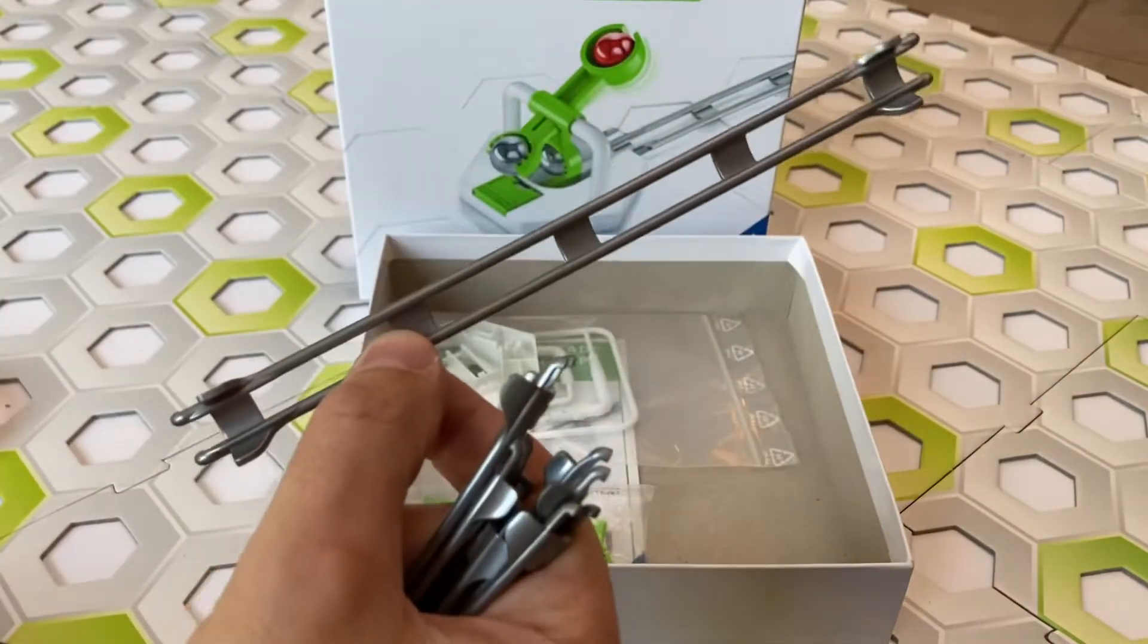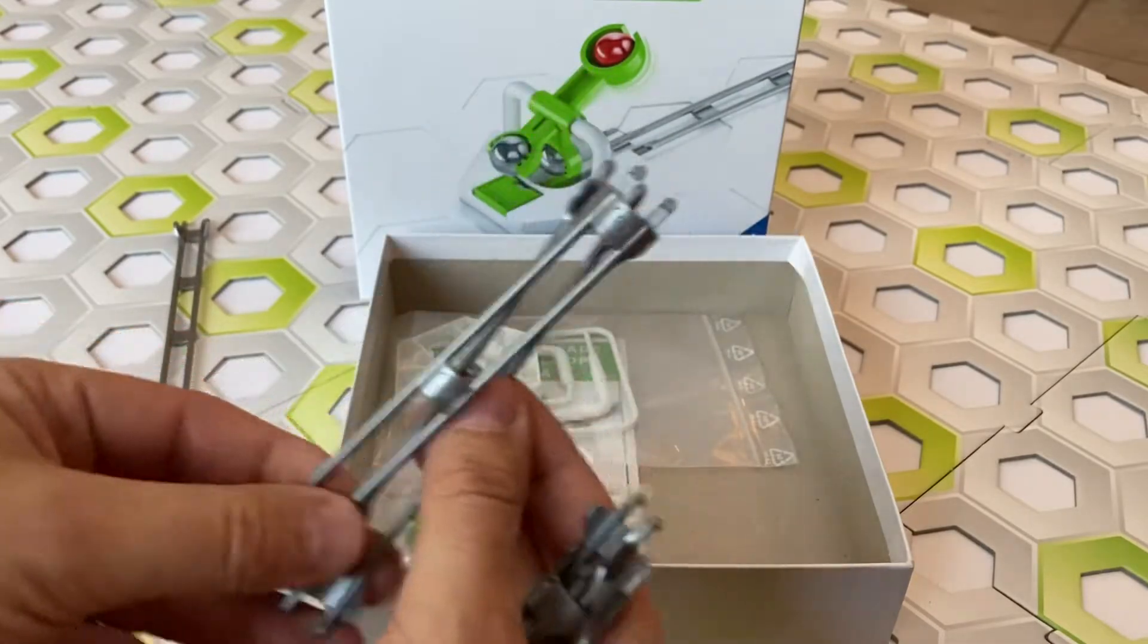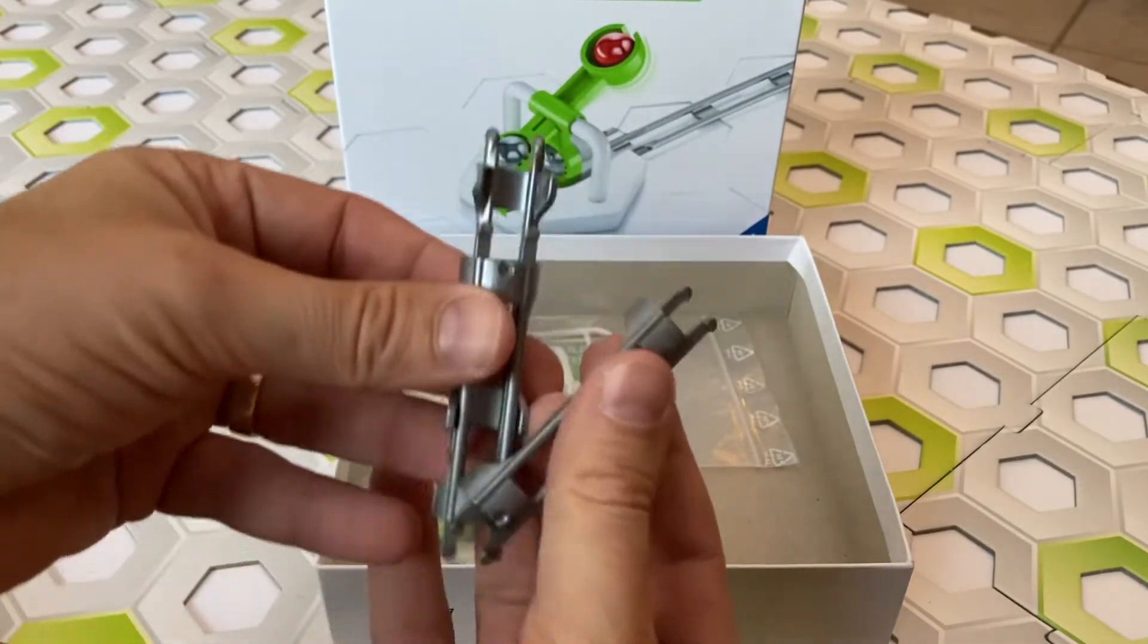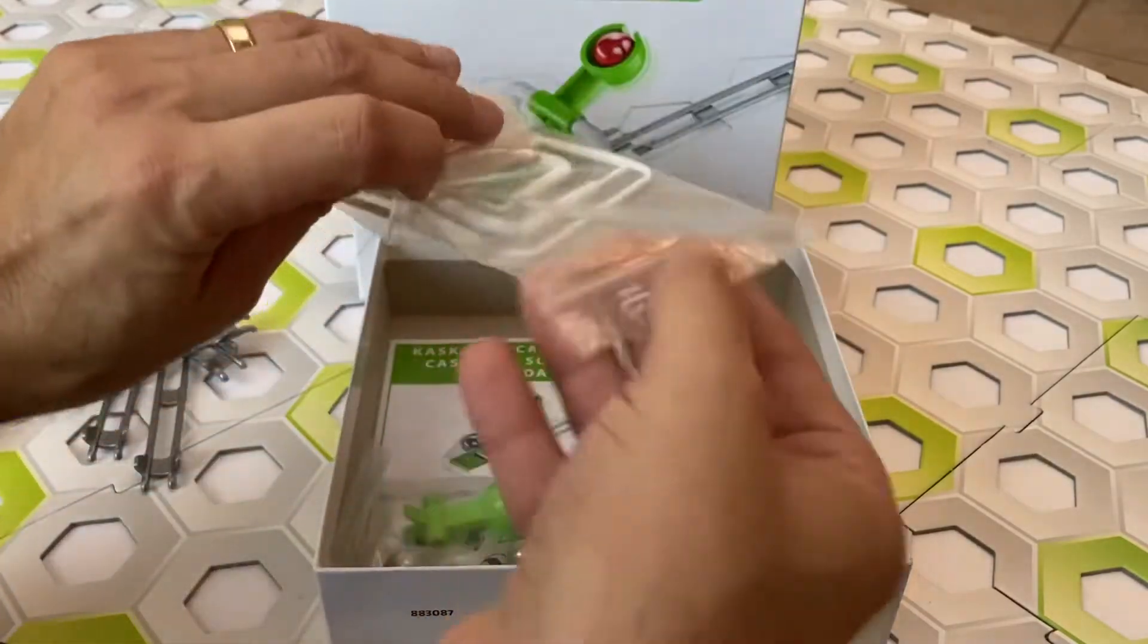You get one long track piece which spans three spaces, two medium track pieces which span two spaces, and three of the small track pieces which span a single space each.